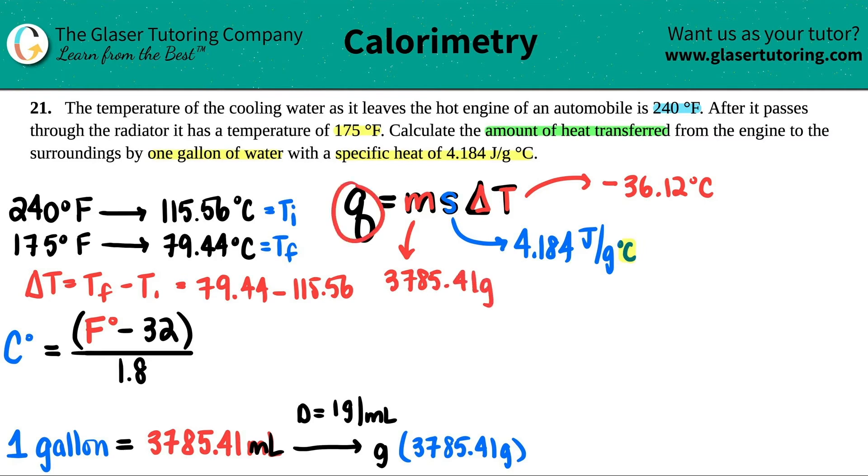3,785.41 grams. And now we're ready to just calculate the heat, which is Q. So Q equals 3,785.41 times 4.184. When I start plugging in all my numbers, I don't plug in the units because I know that I have all the correct units. I don't like to get confused.